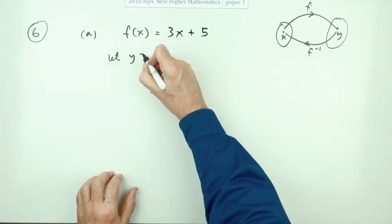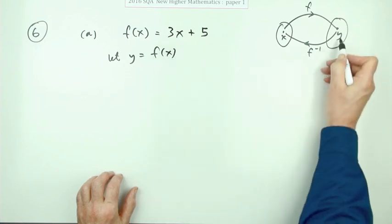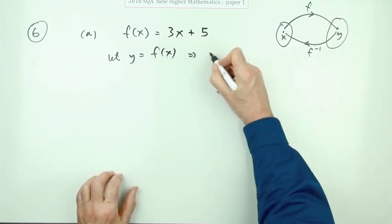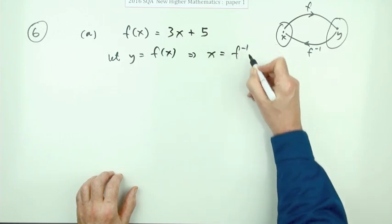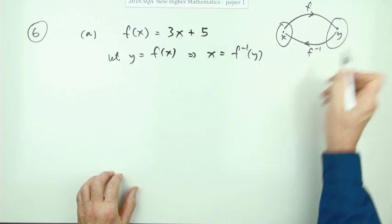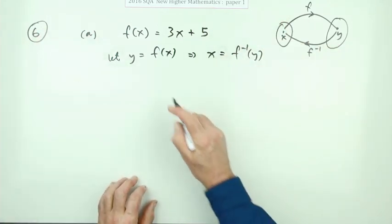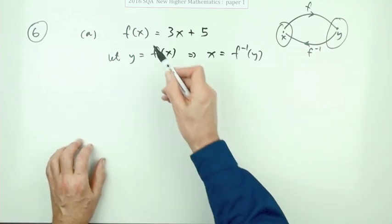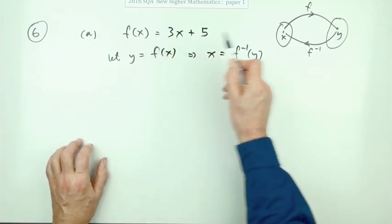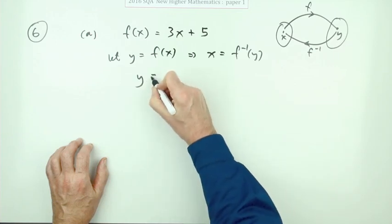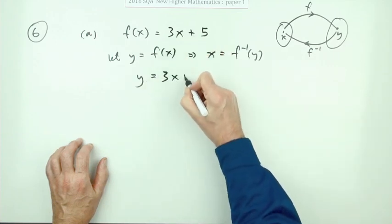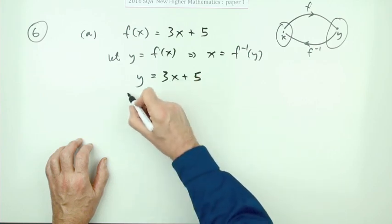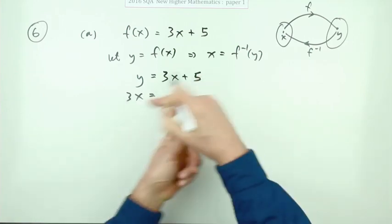One way to find the inverse is to let y be the answer. So x is the number you put in and y is the result, meaning x is given by the inverse function acting on y. If I put in x and the answer I get out is y, I can write: y equals 3x plus 5.